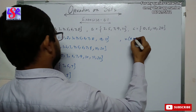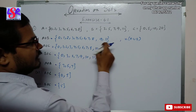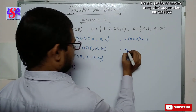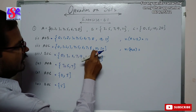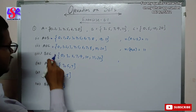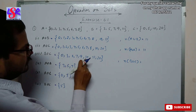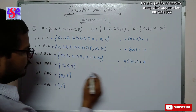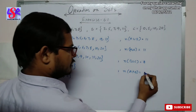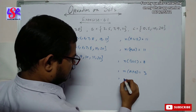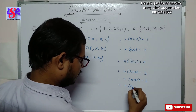Now for the cardinal numbers: n(B ∪ C) = 8 since B union C has 8 elements. For n(A ∩ B), we have 3 elements — 3, 5, and 7 — so n(A ∩ B) = 3. For n(A ∩ C) = 2, and for n(B ∩ C) = 1.